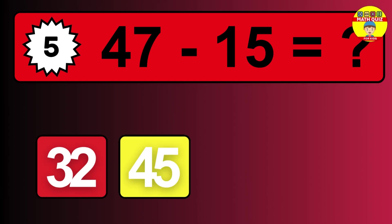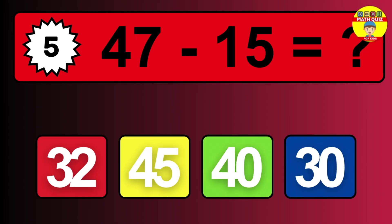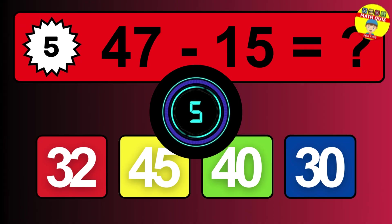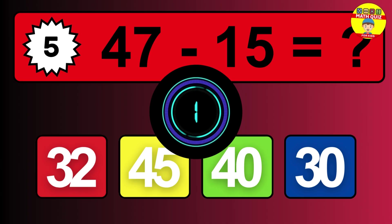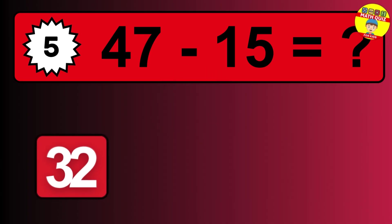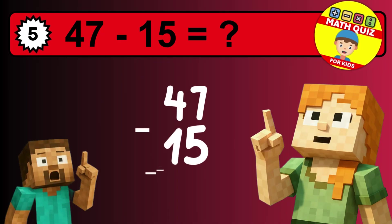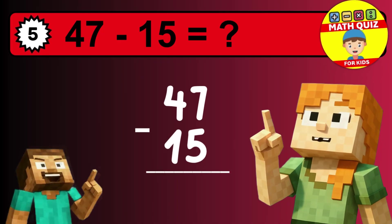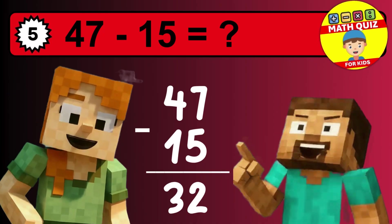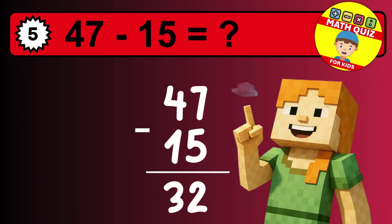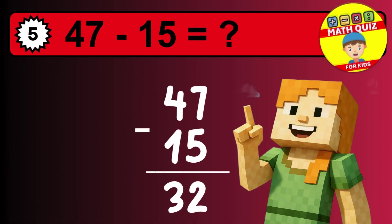What is 47 minus 15? Let's solve this step by step. We start with the units: 7 minus 5 is 2. Then we go to the tens: 4 minus 1 is 3. The final answer is 32.